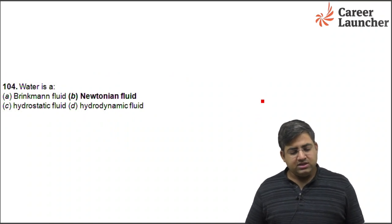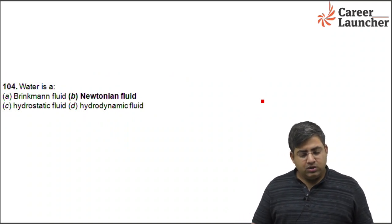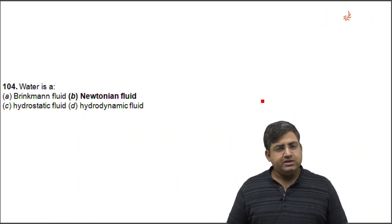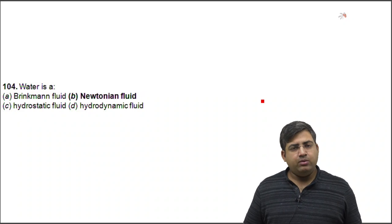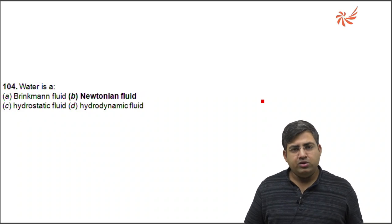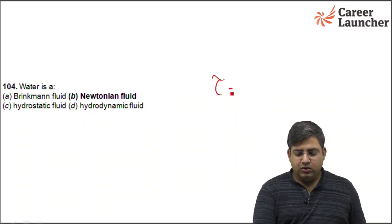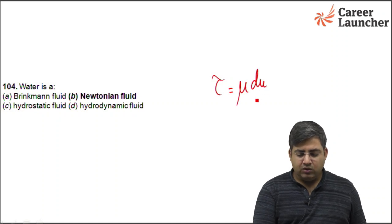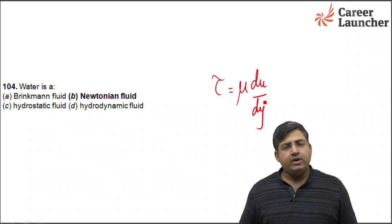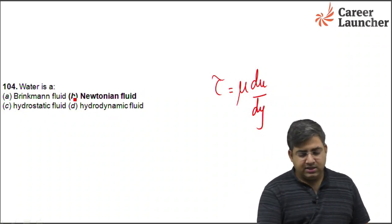The next question is about water. Water is a type of Newtonian fluid — we assume it follows Newton's law of viscosity: τ = μ × (du/dy). The right answer is B.